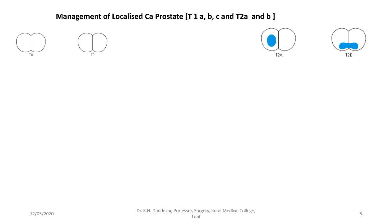Let us first consider the management of localized or early carcinoma of prostate. This includes stage 1 and 2, or T1A, T1B, T1C, T2A and T2B. Let us see the management outline step by step.